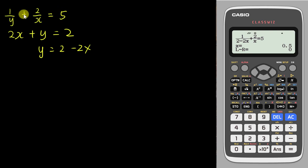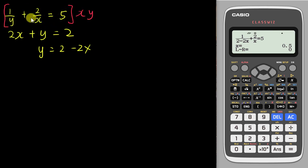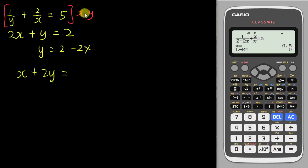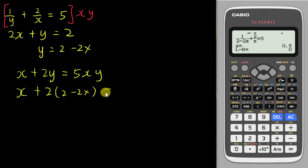What you need to do is change this reciprocal equation into linear or quadratic form. Multiply the entire equation by xy to eliminate the denominators. So 1/y × xy gives x, and 2/x × xy gives 2y, and 5 × xy gives 5xy. Now substitute y = 2 minus 2x, so the equation becomes: x + 2(2 minus 2x) = 5x(2 minus 2x).